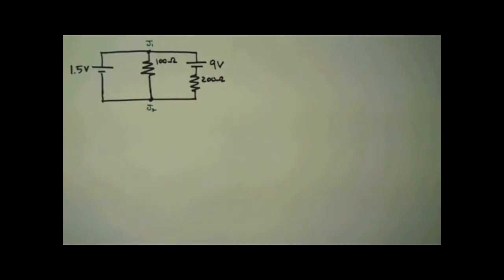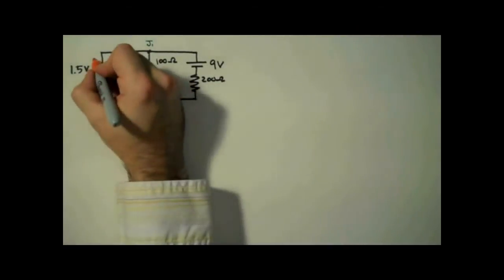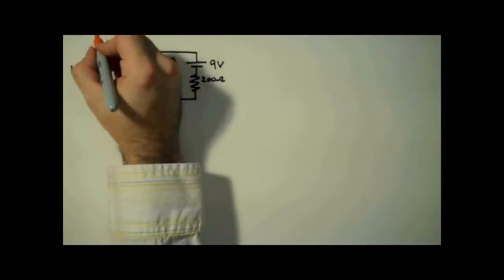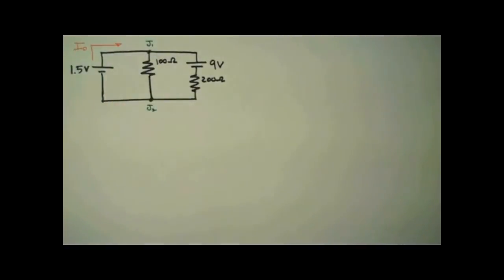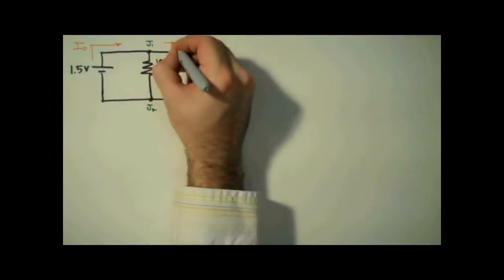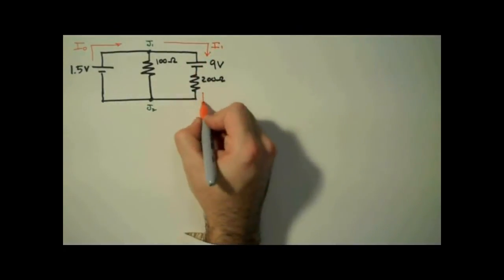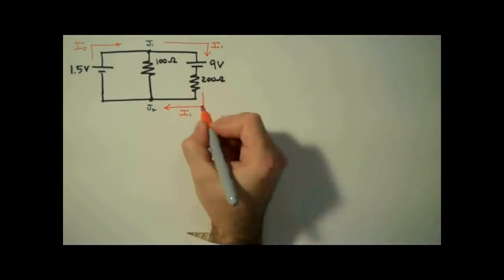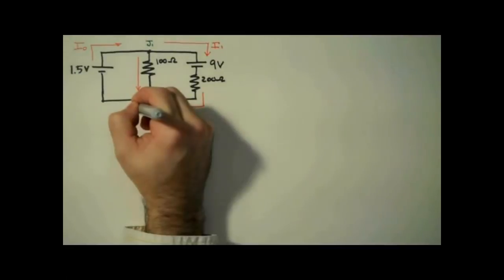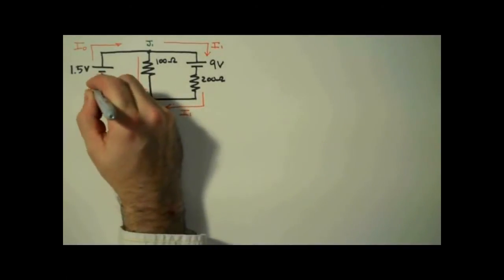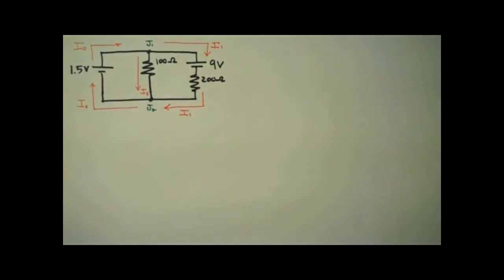I'm going to label mine J1 and J2. Next, we label our currents. I'm going to label this current I0. After junction 1, I'll have I1 on the right leg. Note that I0 does not pass through junction 1. This middle leg will be I2. And when I1 and I2 rejoin, we have I0.